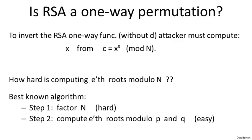So if an attacker wanted to invert the RSA function, what the attacker has is basically the public key — namely N and E — and now he's given x to the e, and his goal is to recover x.